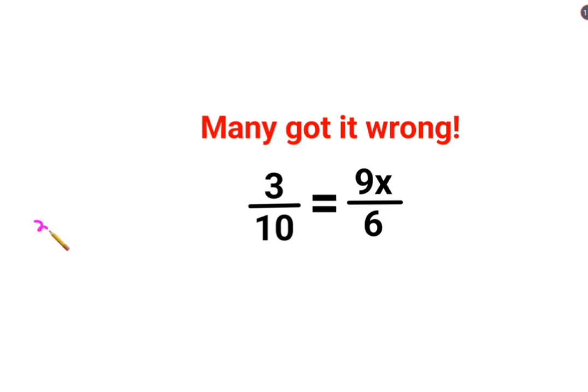The first thing we should do is try and shift the numbers to the other side. We have 9x, so we will multiply both sides by 6 first, and then we will divide both sides by 9.